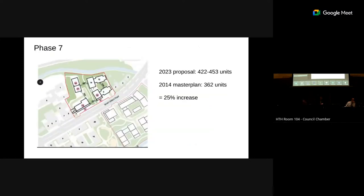Phase seven proposes a green finger that connects through from the phase three park, which is currently under construction. This phase proposes a taller building of 17 stories and 15 stories to the northwest, with 453 units proposed, up from 360 in 2014.